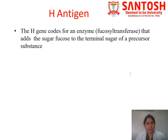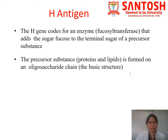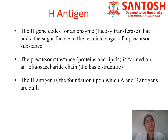The H gene codes for an enzyme, fucosyltransferase, which adds the sugar fucose to the terminal sugar of the precursor substance. The precursor substance is a basic structure formed on an oligosaccharide chain composed of proteins and lipids. On this precursor substance, the H gene with the help of fucosyltransferase will add fucose. H antigen is the foundation on which A and B antigens are built.